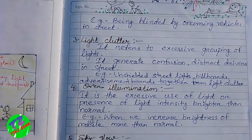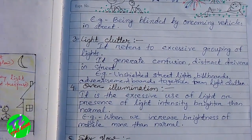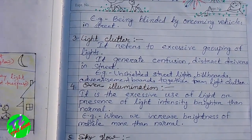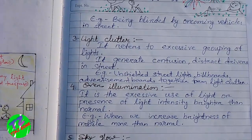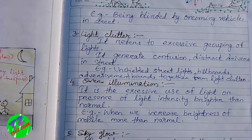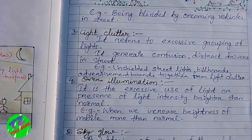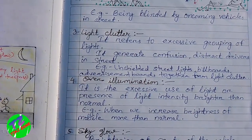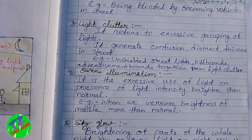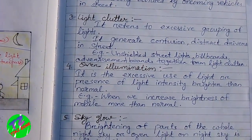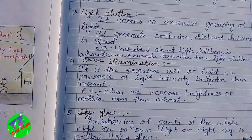The third type is light clutter. Light clutter refers to excessive grouping of lights; it generates confusion and distracts drivers on the street. Some examples of light clutter are unsettled street lights, billboards, and advertisement boards together forming light clutter on the street.